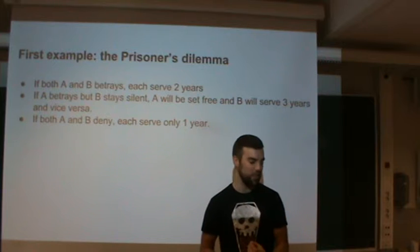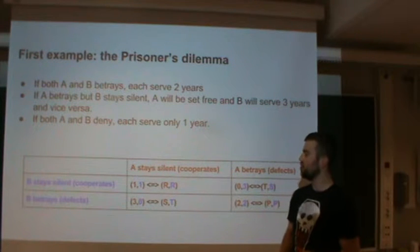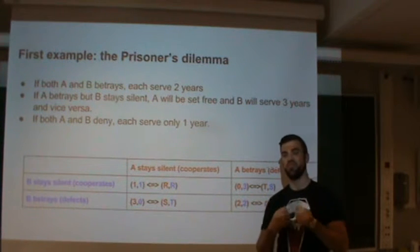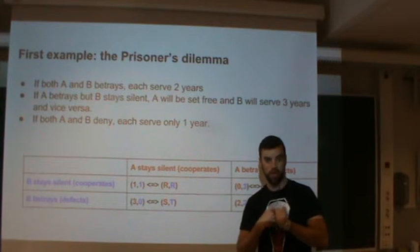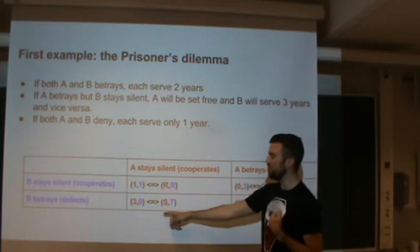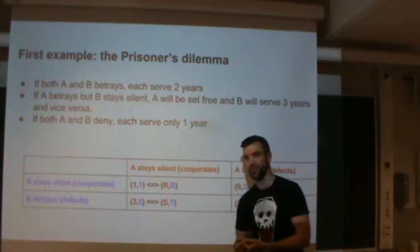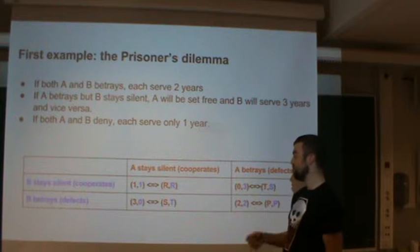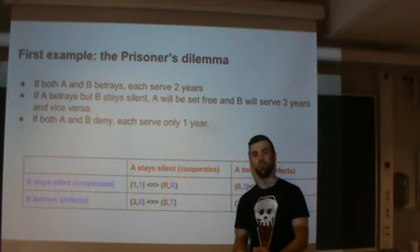We can write out what we call the payoff matrix, which for this problem shows all outcomes. A rational player thinks: regardless of my choice, if prisoner B betrays me, I get three years if I don't betray him, but only two years if I do. So obviously I should betray him. In the other scenario, if B stays silent, I get two years for staying silent or zero years for betraying him. So it's obvious I should always betray the other prisoner.